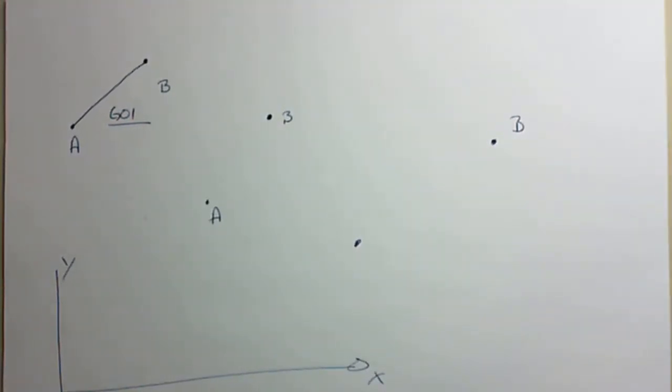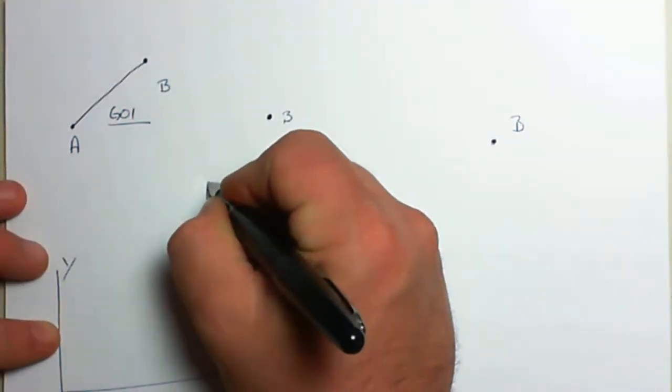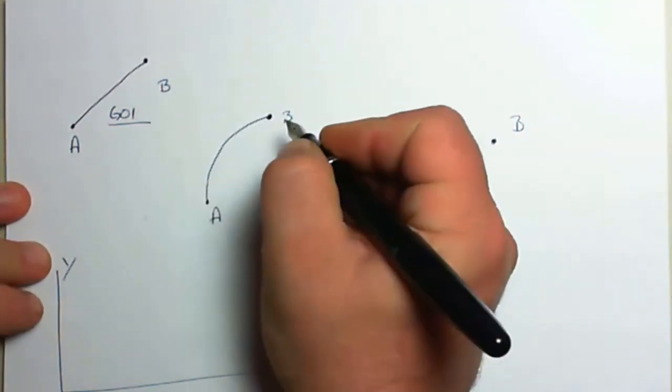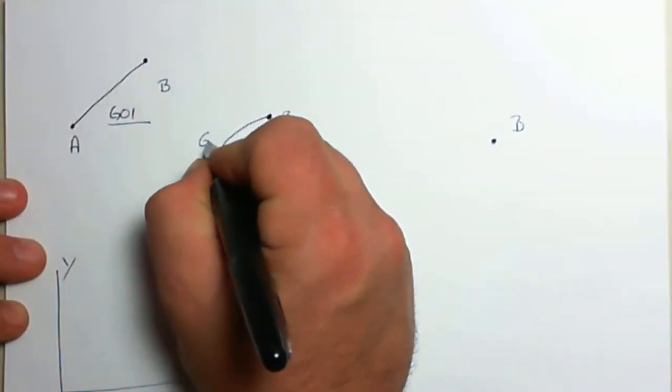If we want to move in an arc motion, we can move from point A to point B in a constant radius arc. Now if we want a clockwise arc, we'll command a G02.